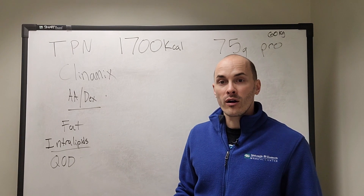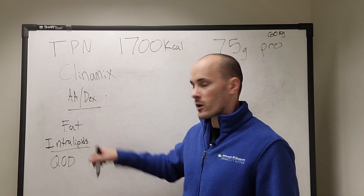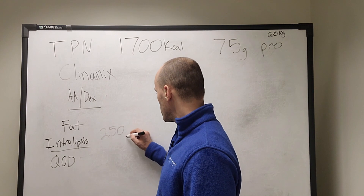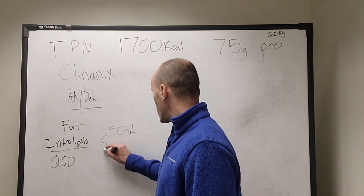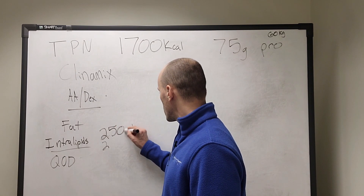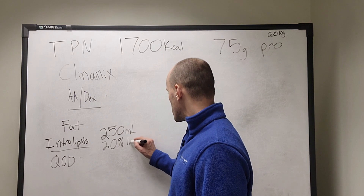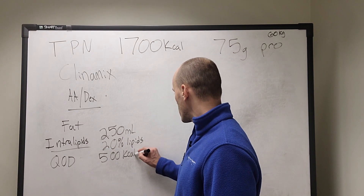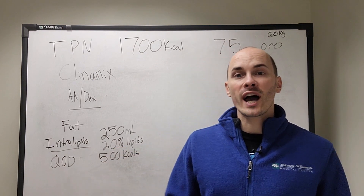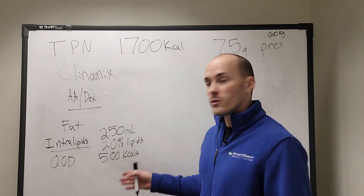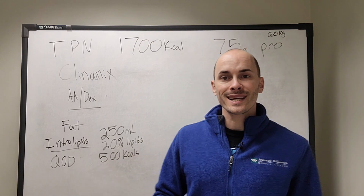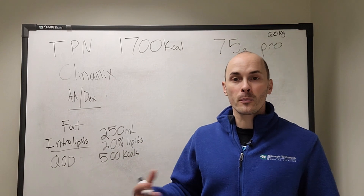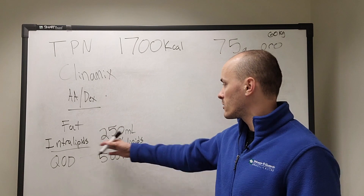The other thing we need to figure out is our fats. We're going to be using a product called intralipids. Intralipids come in a 250 milliliter bag of 20% lipids, and that bag will be 500 kcals — because a 20% lipid solution is 2 calories per milliliter. We're not going to give this product every day; we're going to give it every other day, QOD. That means the patient will receive approximately 250 calories from fat every day from intralipids.